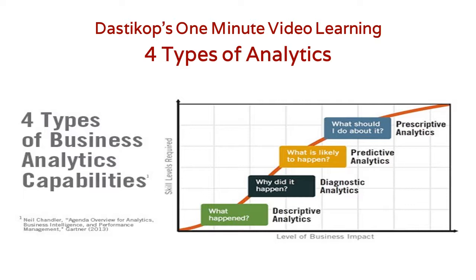Essentially there are four different kinds of analytics. The first is descriptive analytics, in which the central question is: what happened? That means I have historical data and I'm checking out what happened during the past.